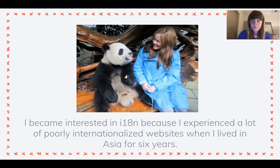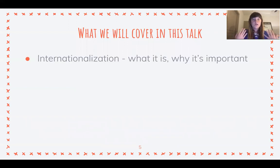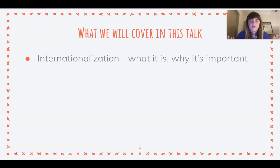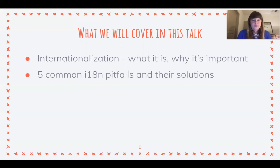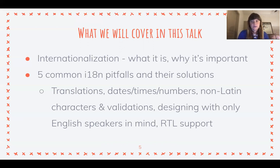What I wanted to cover is the following: first, what is internationalization — a lot of people, myself included, confused internationalization with localization, or think their app only needs to be in English so they don't need to worry about it. We'll talk about how internationalization is different from localization and why it's important. Then we'll dive into five categories: translations, dates/times/numbers, non-latin characters and validations, designing with only English speakers in mind, and RTL support — which stands for right-to-left language support.